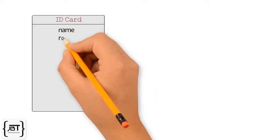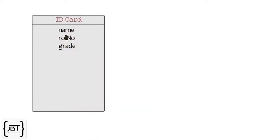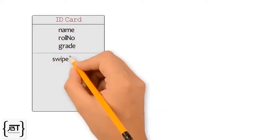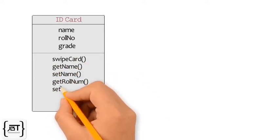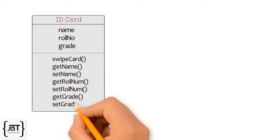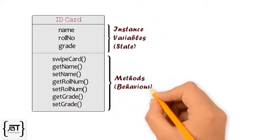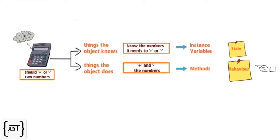The methods of the class are the things we do on a particular card like swiping the card for recording attendance and also getting and setting the different properties. They determine the behavior of the object.